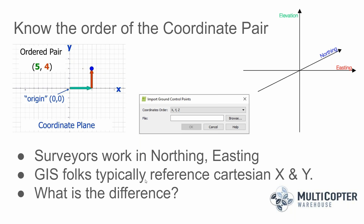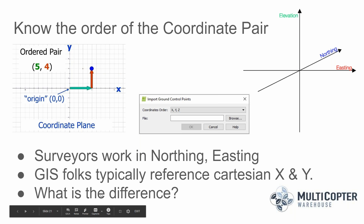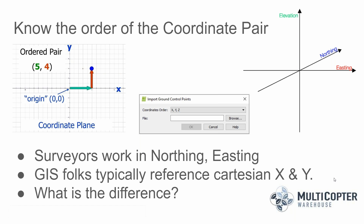It's important to know the order of the coordinate pairs you're getting. GIS folks typically work in X, Y, Z order, while surveyors often provide data in northings and eastings — essentially Y, X, Z order. There's no significant difference other than the order the pair comes in. It's important that you know which order your coordinates are in, and we'll go through how to tell if you've got them in the wrong order in just a moment.